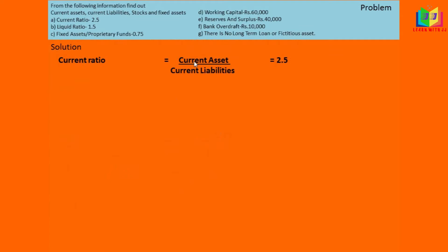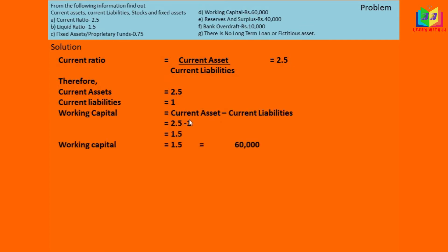First, we will start with the current ratio. Current assets divided by current liabilities is the current ratio and it is given as 2.5. This shows current asset is 2.5 and current liability is 1. We have a clue that is the working capital 60,000. Current assets minus current liability is the working capital, so 2.5 minus 1 gives 1.5. This 1.5 is the proportion of working capital, and the value of this 1.5 is 60,000.